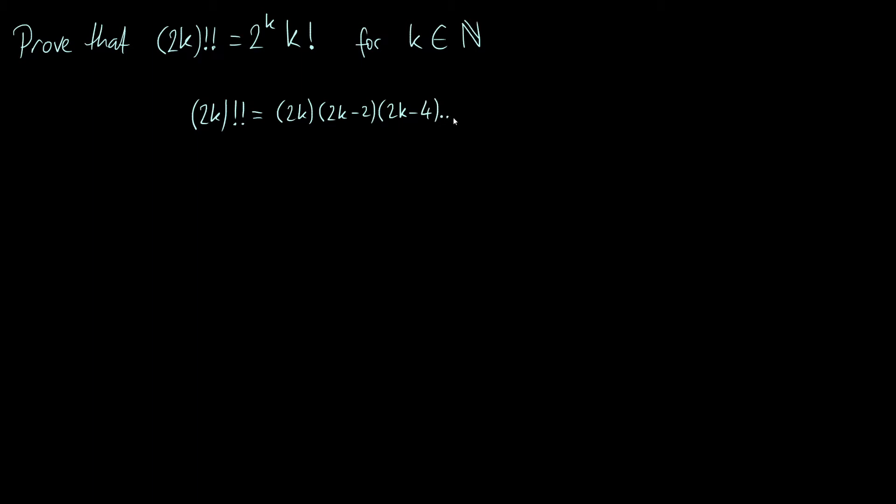Because 2k is an even number, because it has a factor of two, you're going to end up at 2 as your last term. Also notice, how many terms do we have in total in this multiplication?